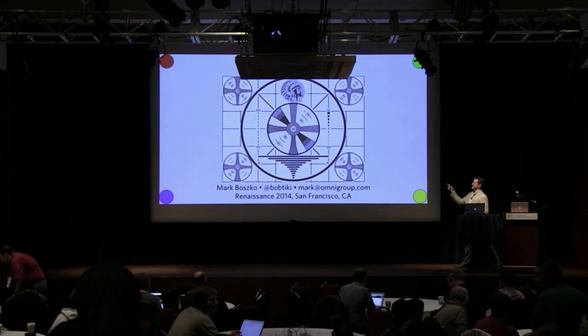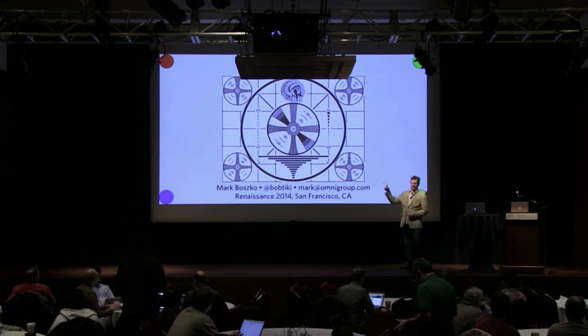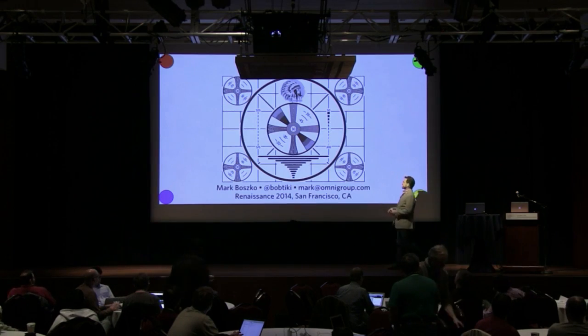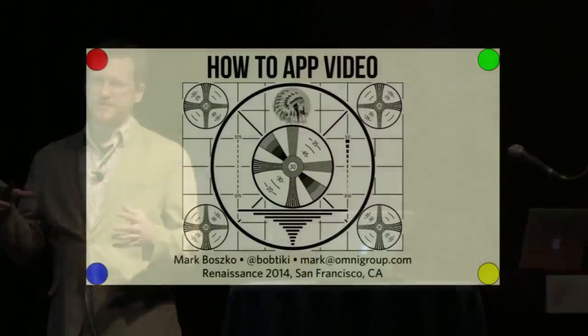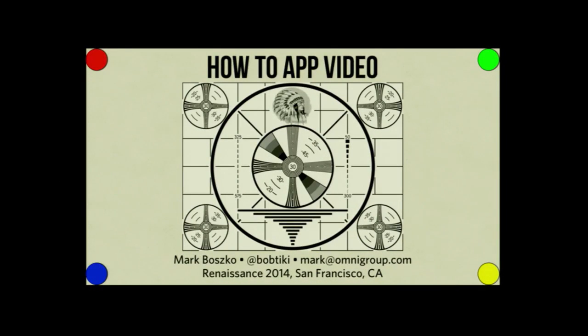Do you guys know what this is? It's an RCA test pattern from 1939, a television test pattern. It was actually part of the original test pattern generator, the RCA TK-1. It was also called a monoscope because inside the box there was a camera pointing at a small version of this carbon etched on an aluminum plate. It's just crazy stuff. I just love that merging of technology and video.